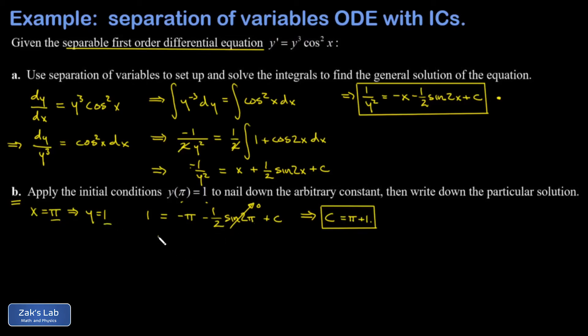The only thing left to do is to write down the particular solution, and that's found by just replacing C with the constant we just found. So I get this implicit curve: 1/y² = -x - (1/2)sin(2x) + π + 1. Now I have the unique implicit curve satisfying the differential equation and passing through the indicated point, and we're done.